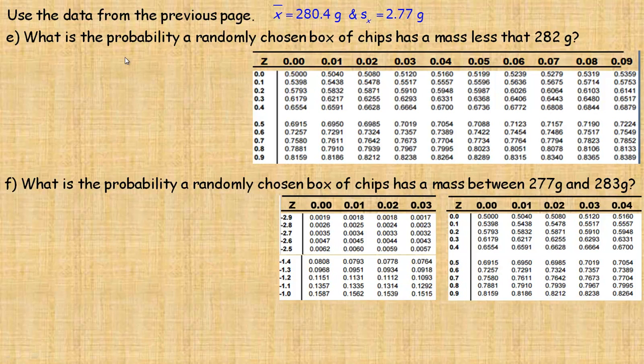So for question E here, we're asked, what is the probability a randomly chosen box of chips has a mass less than 282 grams? So what we need to do is find the z-score for 282.